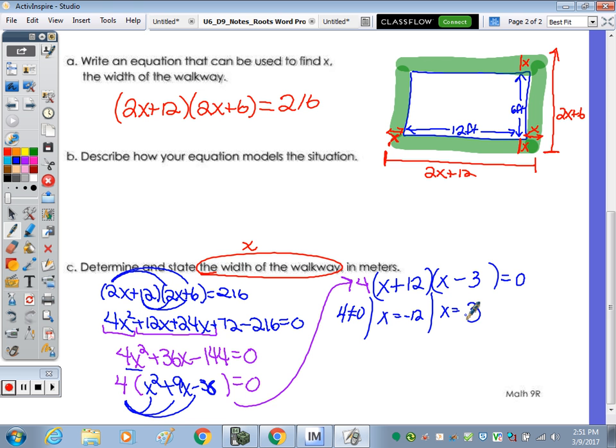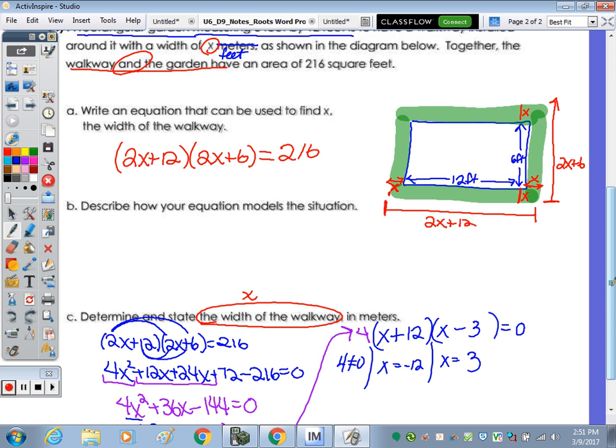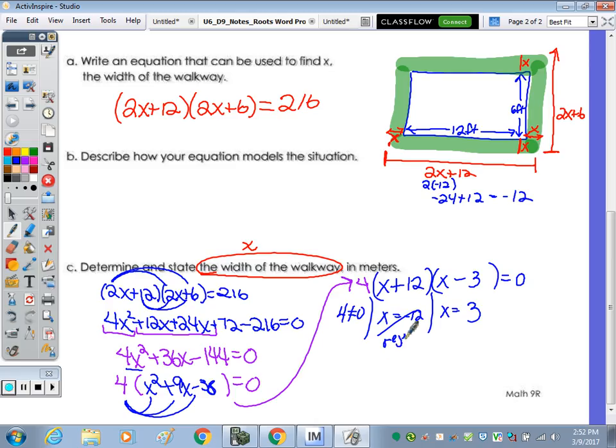Is there any answer that doesn't make sense here? Negative 12. If you just plug it in here, 2 times negative 12 gives you negative 24, plus 12 gives you a negative length. We don't want that. So we have to reject the negative. If X is 3, determine and state the width of the walkway in feet, it's going to be our answer 3 feet.